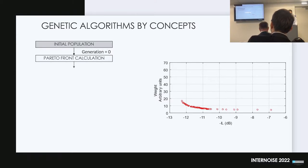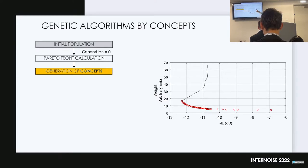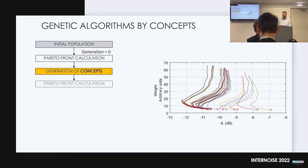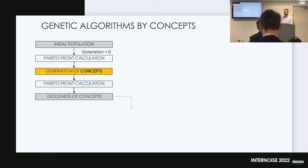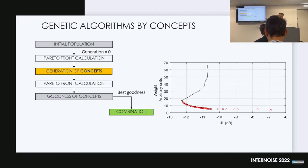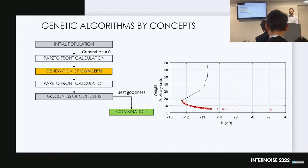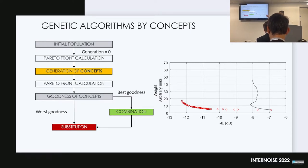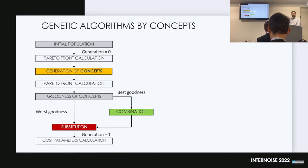Starting from the initial population and calculating its Pareto front, we generate concepts by making each individual bigger or smaller. Doing this for each individual in the Pareto front yields a new population. We then recalculate the Pareto front for this population and analyze the 'goodness' of the concepts: a concept has great goodness when it has many individuals within the Pareto front. Concepts with the best goodness are combined to generate new elements that substitute those with worse goodness — those with very few or only one element in the Pareto front. This produces a new generation for which cost parameters are recalculated, and the process repeats.